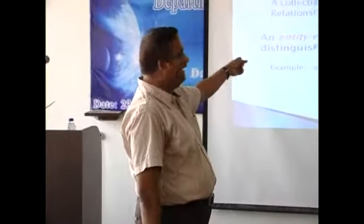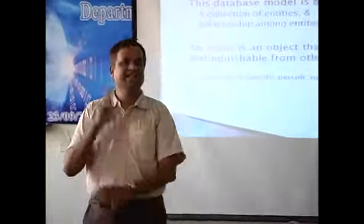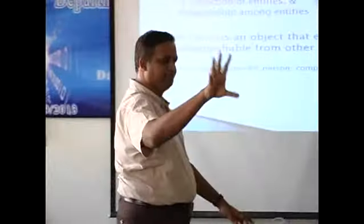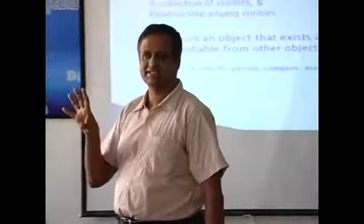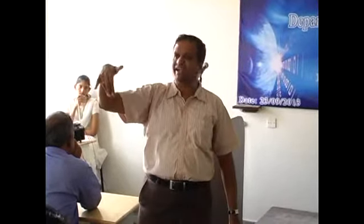The database model is based on a collection of entities. We are going to understand what is an entity and the relationship between entities. An entity is an object that exists and is distinguishable from other objects. For example, let us assume there is a database for our college. Student is an entity. Faculty is an entity. HOD is also a faculty, so we do not have a separate entity called HOD.